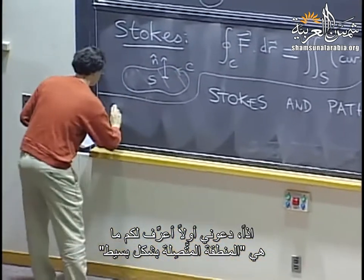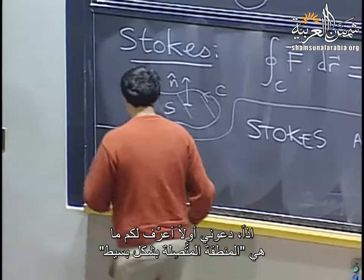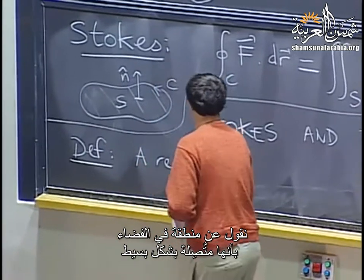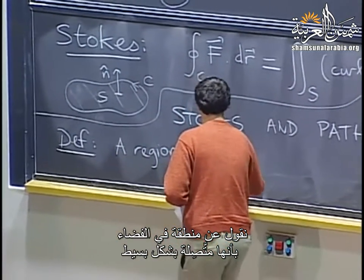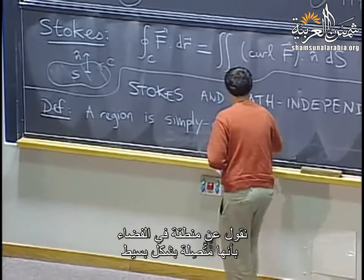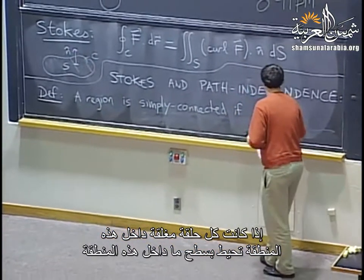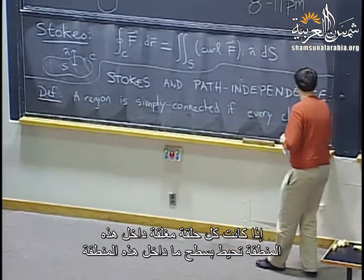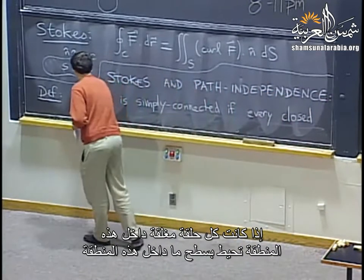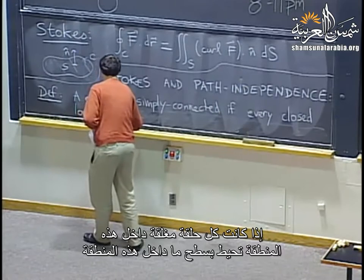Let me first define what a simply connected region is. We say that a region in space is simply connected if every closed loop inside this region bounds some surface again inside this region.